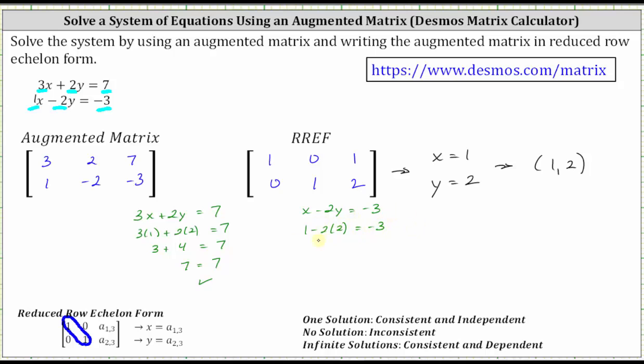Simplifying the left side, we have one minus four, and one minus four is negative three. Negative three equals negative three is true, verifying the ordered pair also satisfies the second equation.